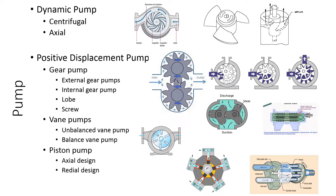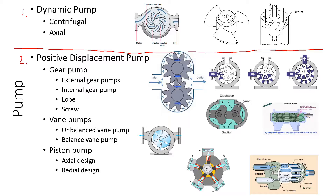Pumps can be divided into two main categories: dynamic pumps and positive displacement pumps. Dynamic pumps work primarily on pressure difference. Looking at the impeller, when it rotates, a vacuum is created right behind the impeller blades. Rotating quickly creates a vacuum inside the housing, while the outside, for example, is at atmospheric pressure.